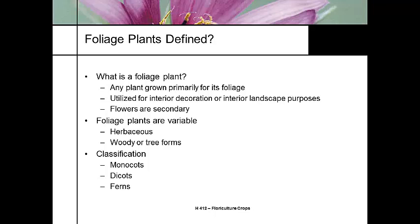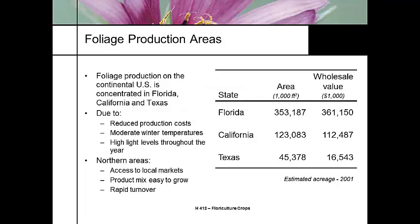There's a new fern out that's just been named — the Gaga fern, named after Lady Gaga. It's because there are two species so far, and the gametophyte stage actually looks like one of her costumes. Also, the DNA sequence has a repeat structure of G-A-G-A-G-A-G-A. She named herself after a Queen song, by the way. I'll put a link on the website for the Lady Gaga fern.